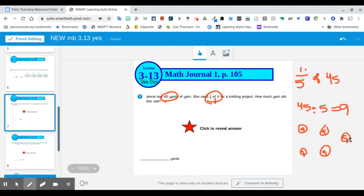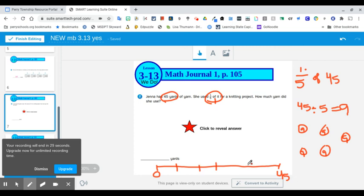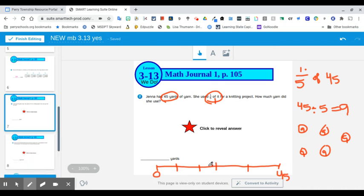You could even do, for this one, a number line. And you might go from 0 to 45. And dividing that into five, and dividing that into five equal groups. So, we might do... We might do it like this.